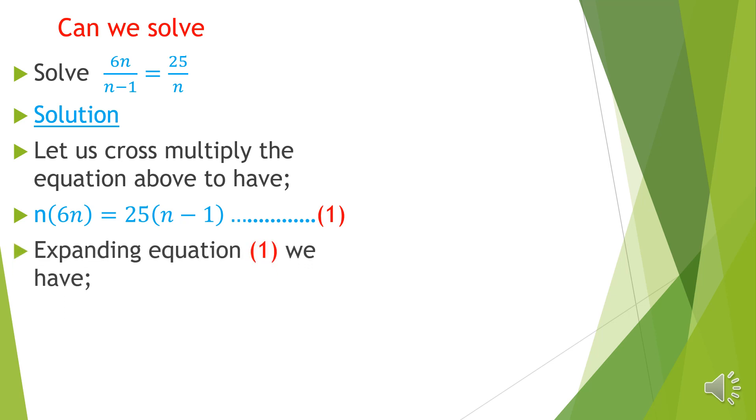If we expand equation 1, we have 6n² = 25n - 25. I'm calling that equation 2. From equation 2, if we simplify, we have 6n² - 25n + 25 = 0.